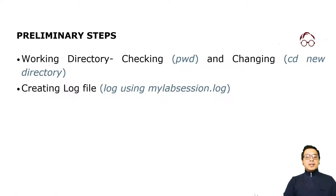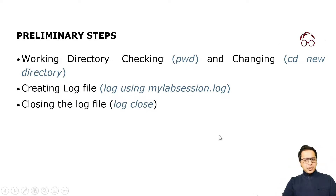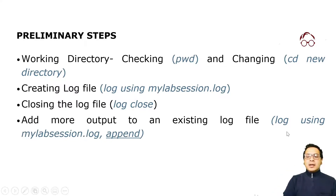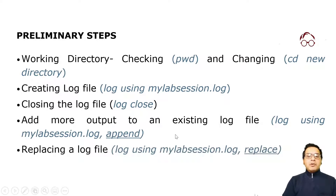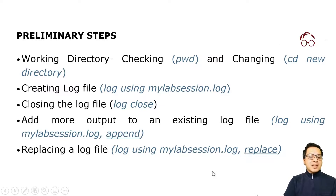You can create a log file using the command 'log using [filename].log', and close it with 'log close' — or do it from the user interface. If you want to add more output to an existing log file you can use 'log using [filename], append'. Whenever you use the append option you add a comma before it. If you want to replace a log file, use the same filename with 'comma replace' to replace the existing log file.